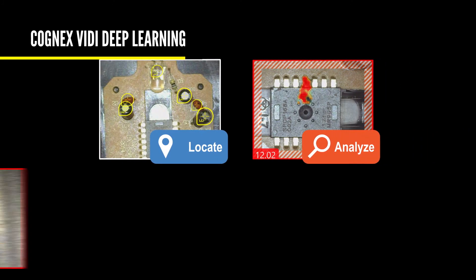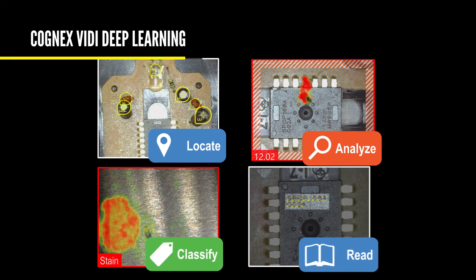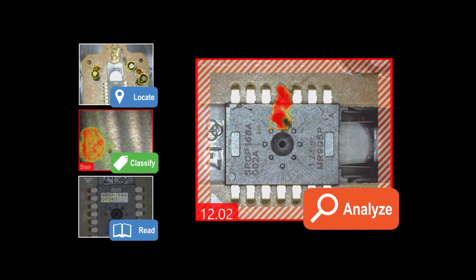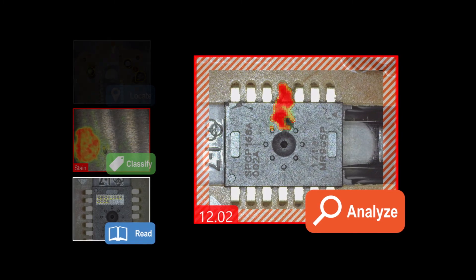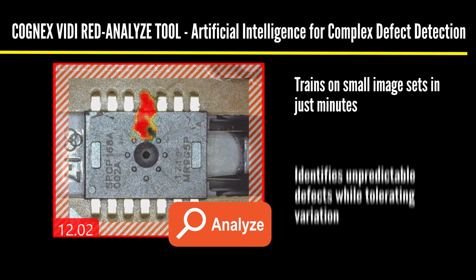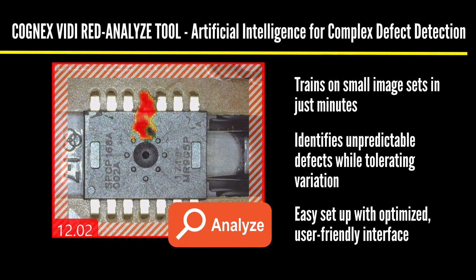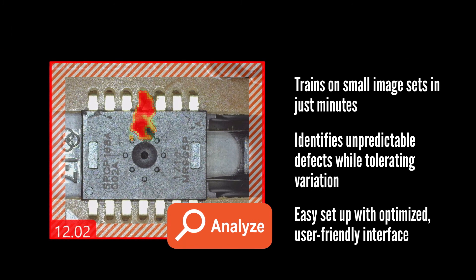The Cognex Vidi Red Analyze Tool detects functional anomalies and cosmetic defects on complex parts and textures. By learning the normal appearance of an object, it identifies unpredictable defects while tolerating variations. All of this, plus the Cognex Designer graphical interface, makes the Vidi Red Analyze Tool a reliable solution for complex part aesthetic inspection and segmentation.